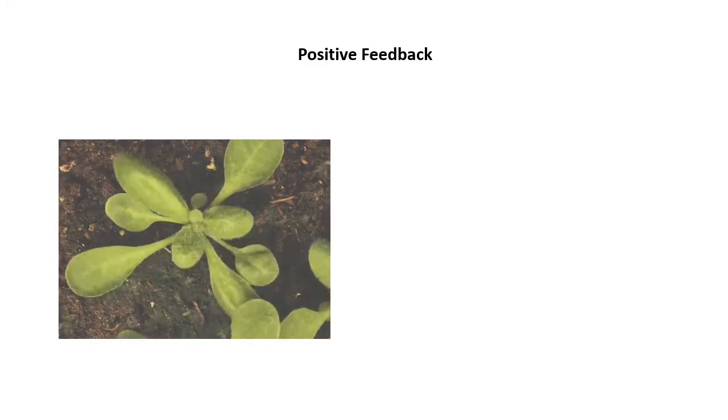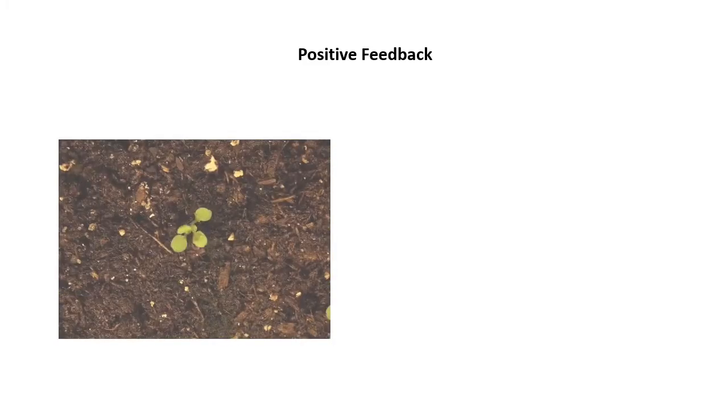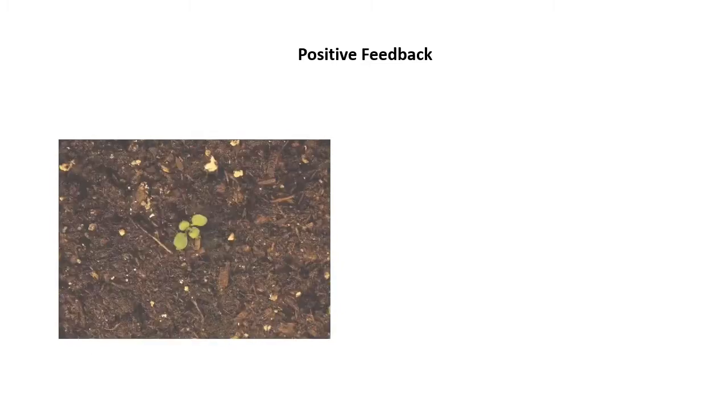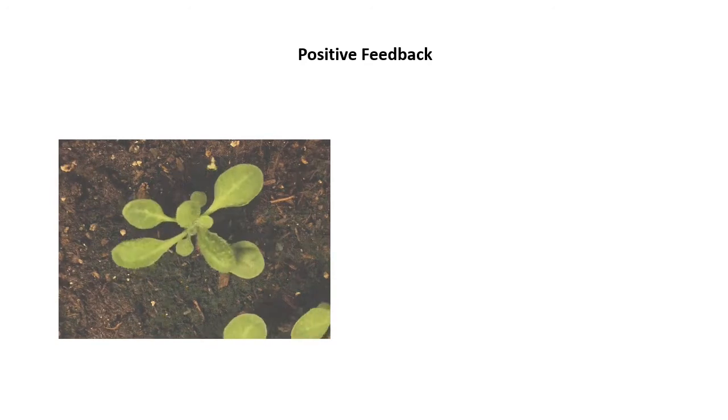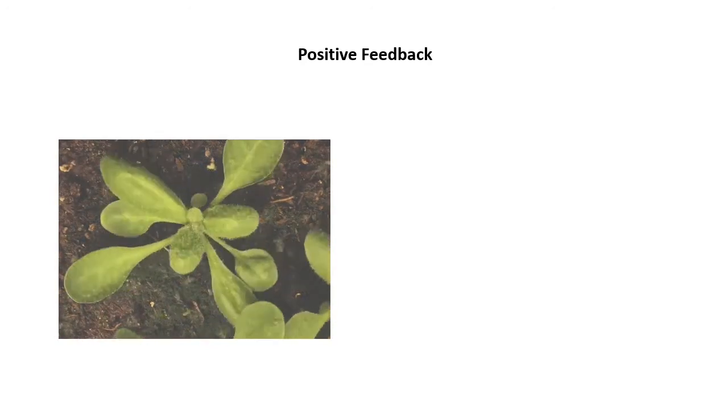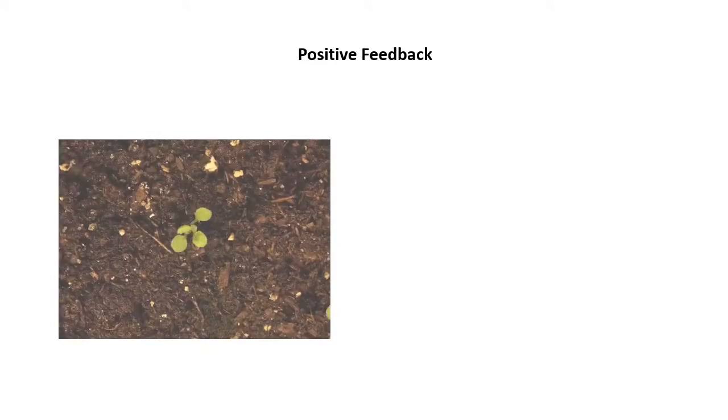When a plant first germinates, for example, it only has a few tiny leaves, so it can't photosynthesize and grow all that quickly. But as it grows more leaf area, it grows faster, so it produces more leaf area and then it grows even faster. Its growth accelerates as it gets bigger.